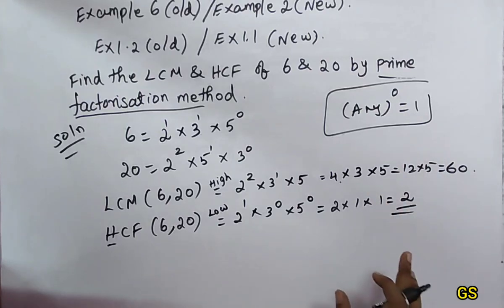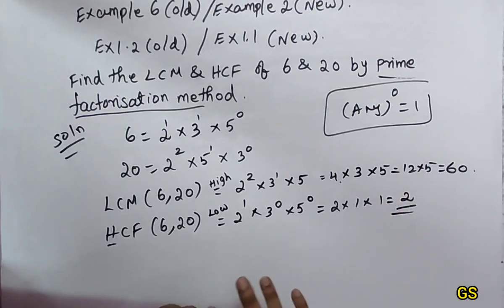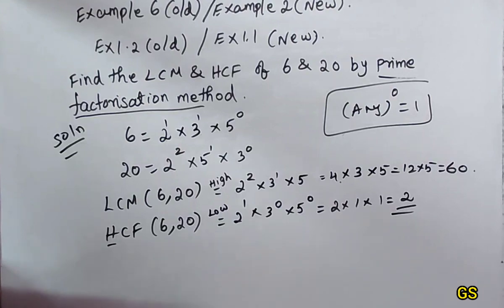So our final answers are: HCF is 2 and LCM is 60.